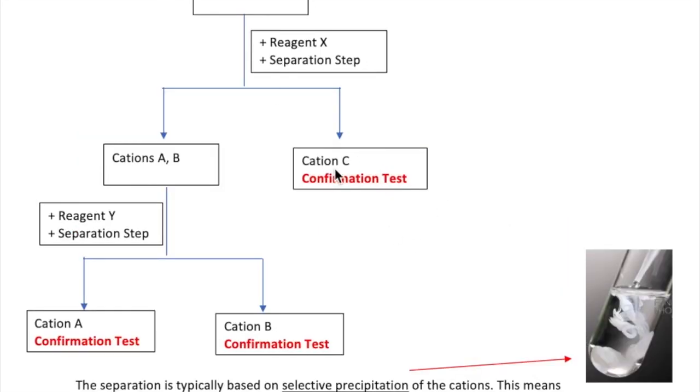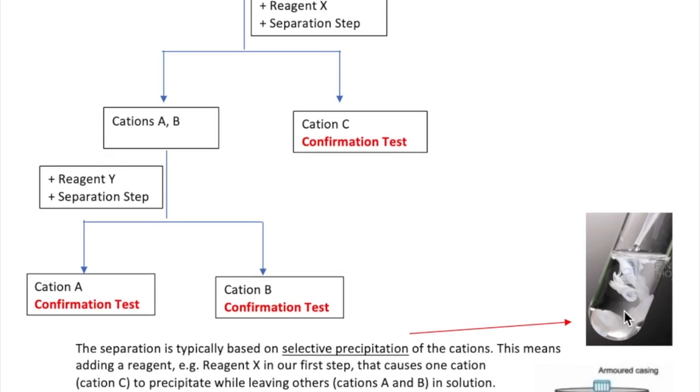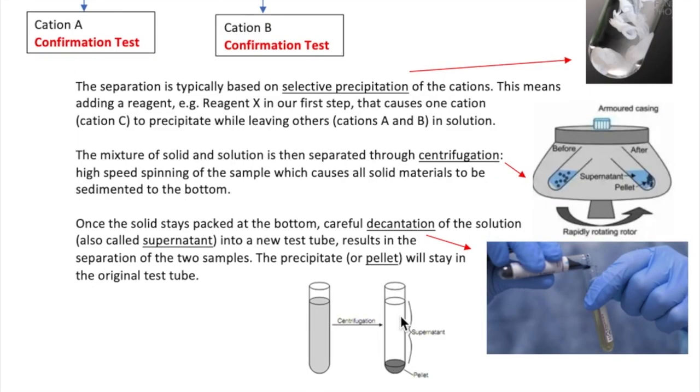Once we precipitate one of the cations, we need to separate out the precipitated cation from the soluble ones. This is done through centrifugation, where the sample is spun at high speed to sediment the solid at the bottom of the test tube. Once centrifugation is done, we carefully decant the supernatant, which is the soluble part of the mixture, into a new test tube while leaving the pellet, the solid part of the mixture, in the old test tube.